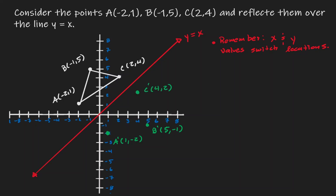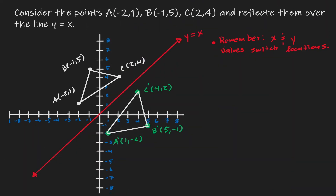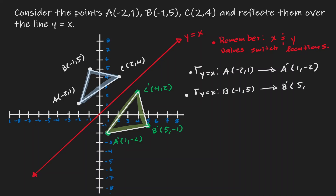Now let's connect the image points. We have reflected triangle ABC over the line y equals x to obtain triangle A prime B prime C prime. Using function notation to represent this reflection: point A, defined as negative 2 comma 1, maps to image A prime at 1 comma negative 2. Let's also show this using function notation for points B and C.